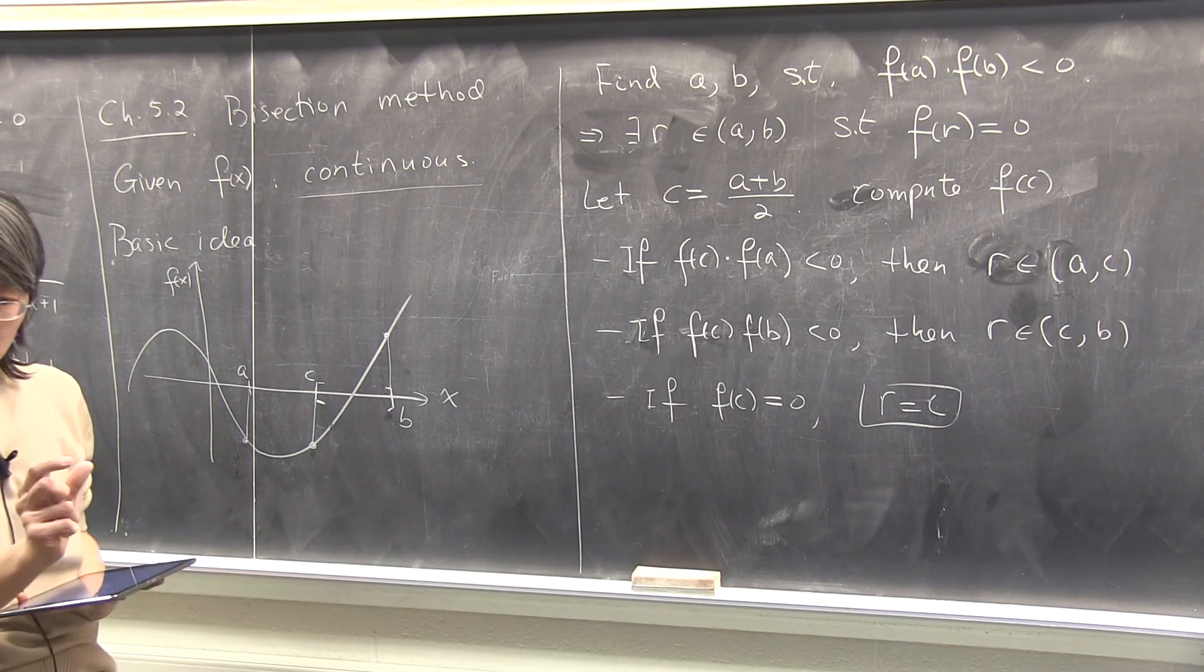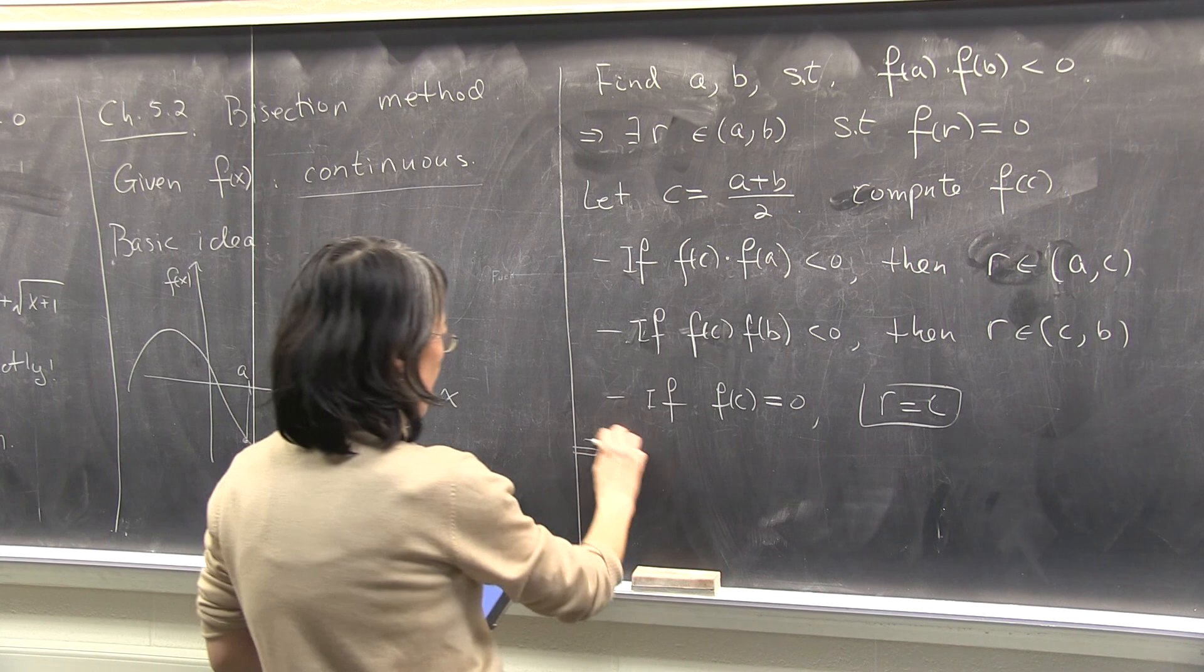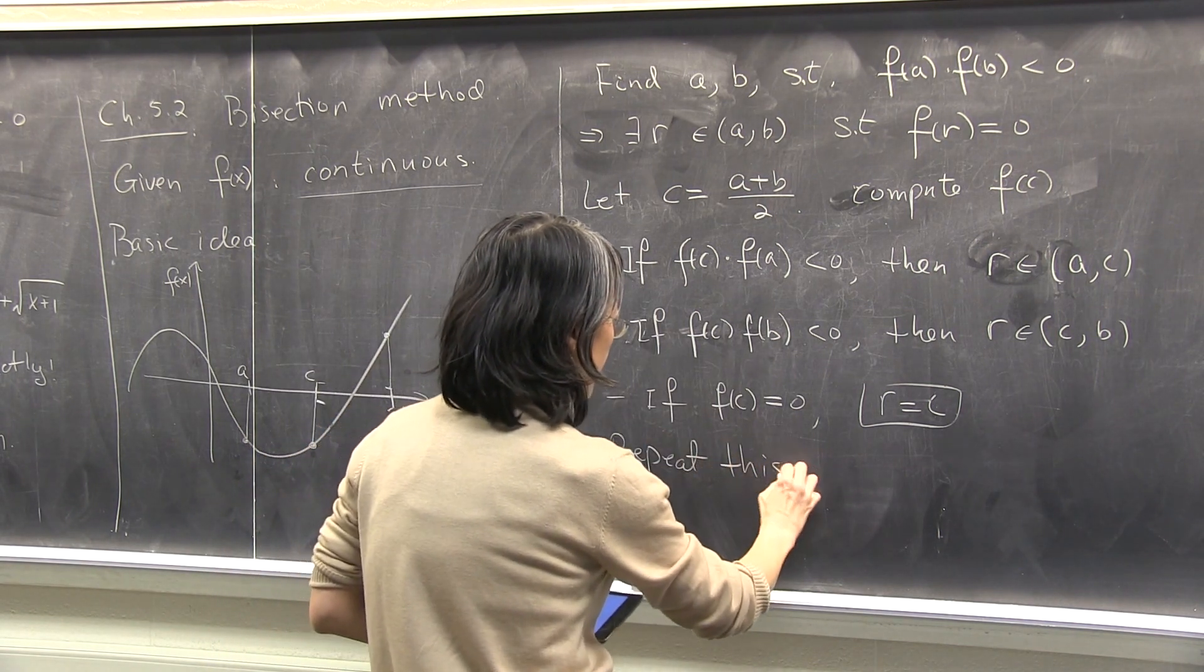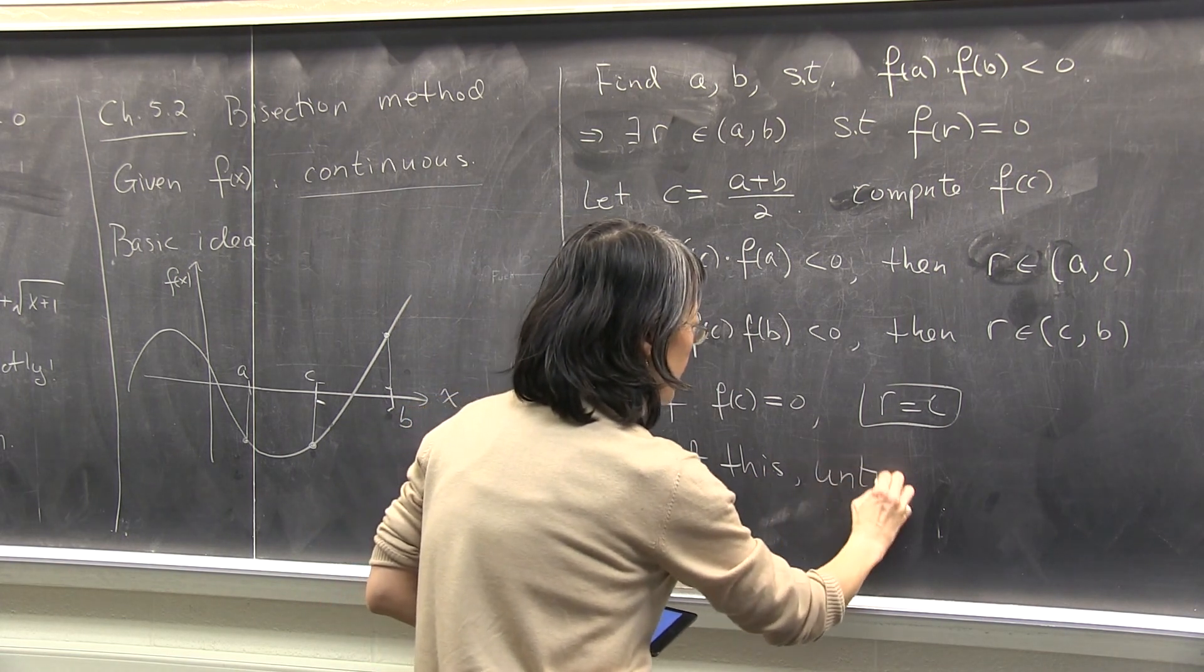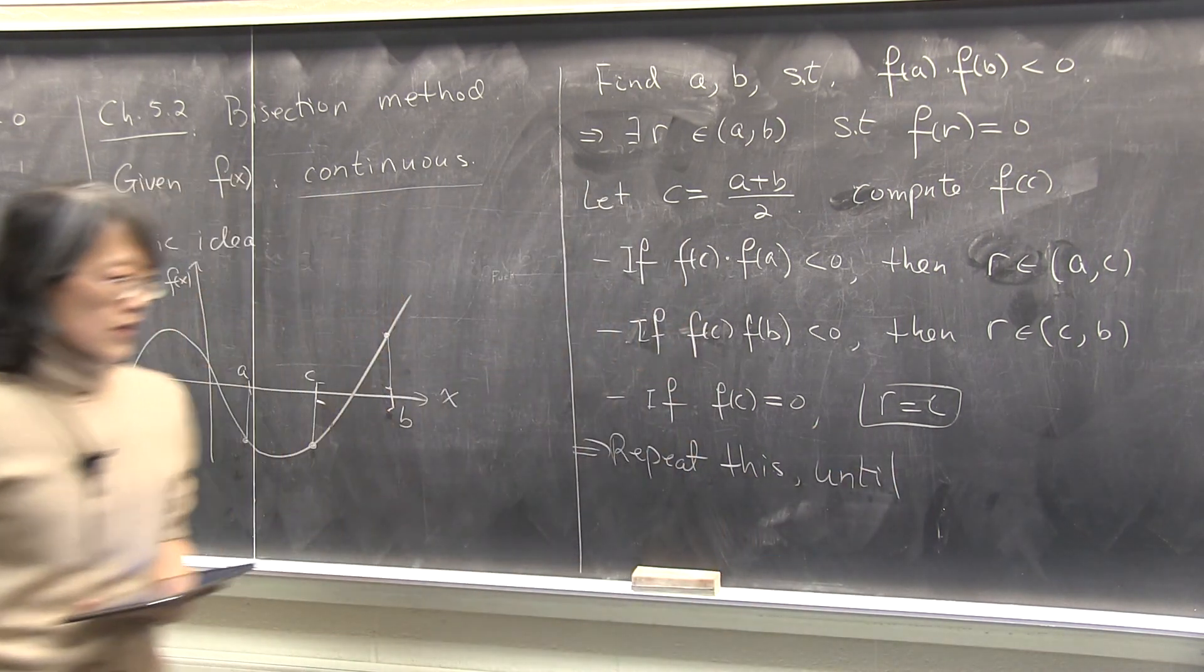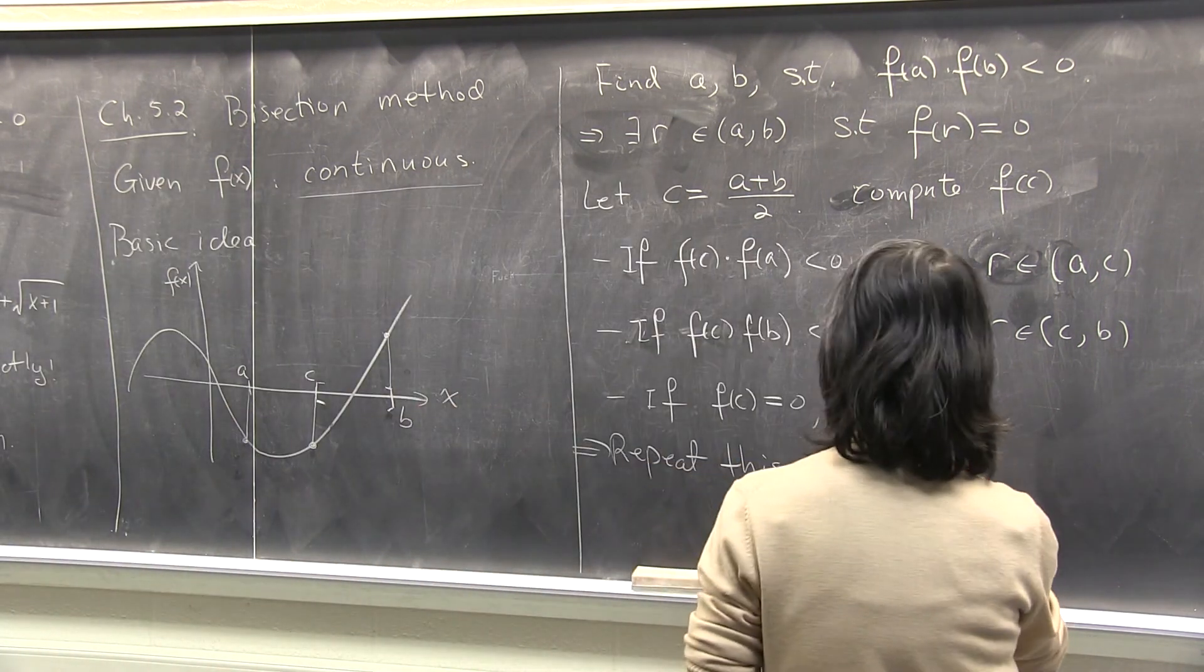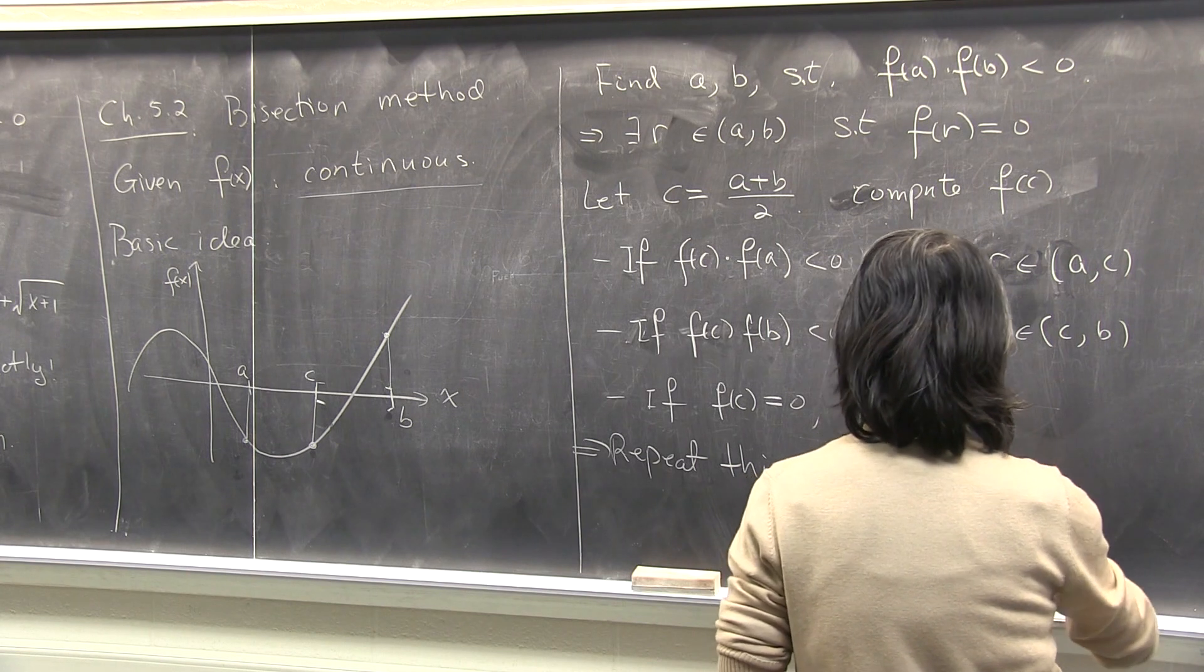And then that's one iteration, and then you nail down the interval that's half of the previous one, and then you repeat until certain criteria is met, right? Accuracy is met. So these are called stop criteria is met.